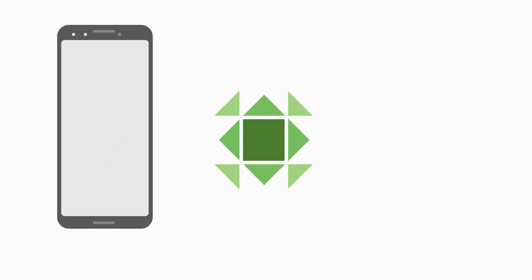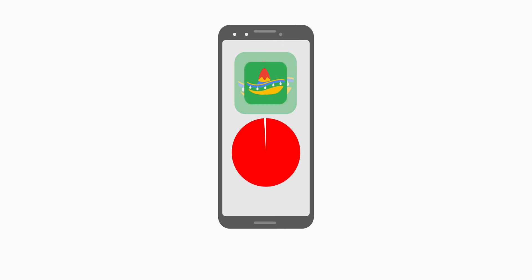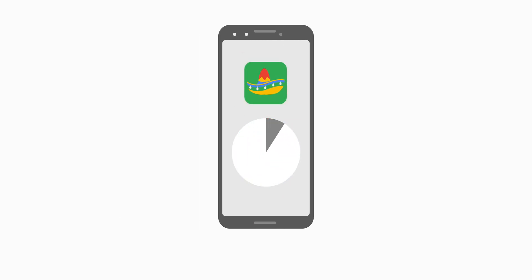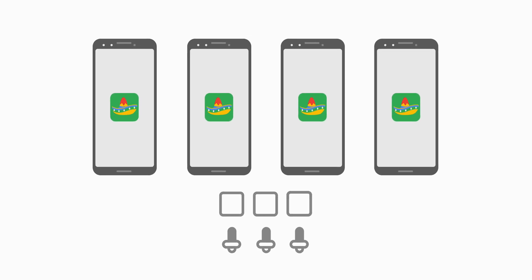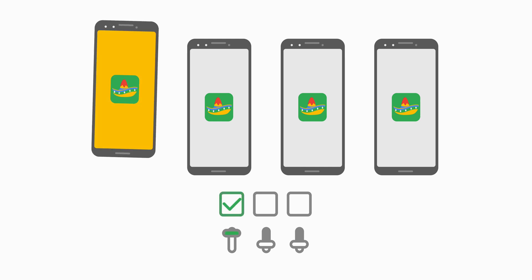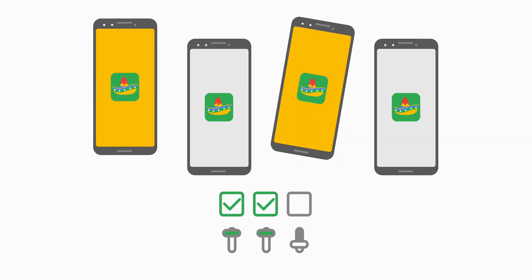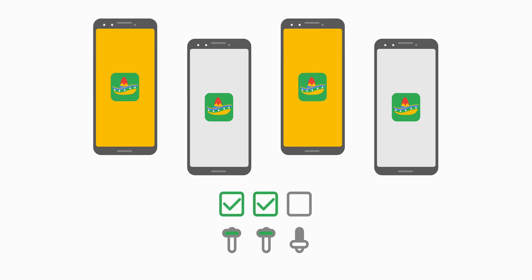With Android App Bundles, Google Play will deliver just the code and resources needed for each user's specific device, making the app size dramatically smaller, freeing up precious storage space. And that's not all — the App Bundle introduces modular app development with dynamic feature modules, allowing you to choose how and when your app loads additional features.